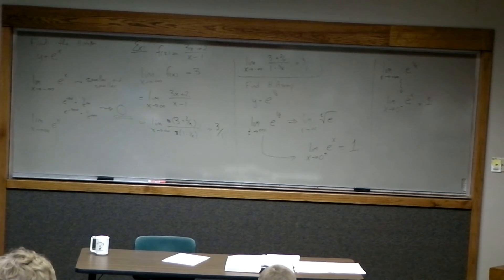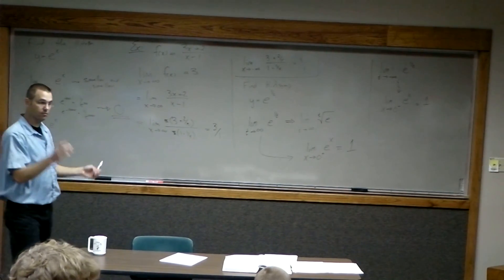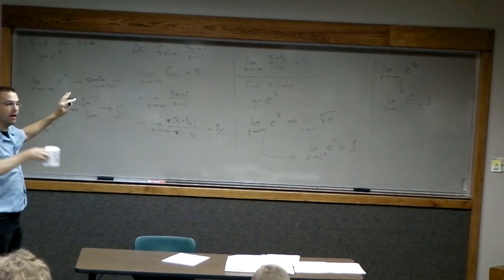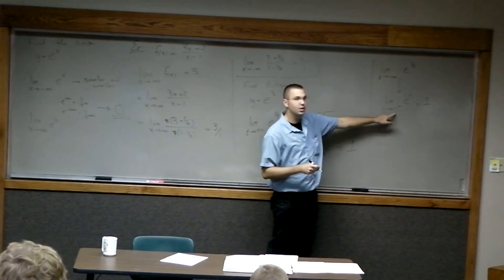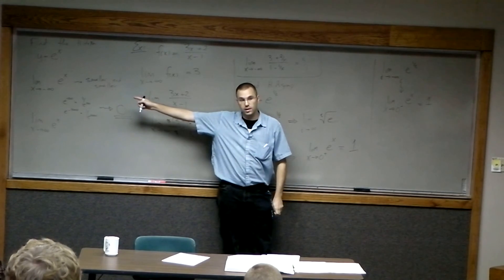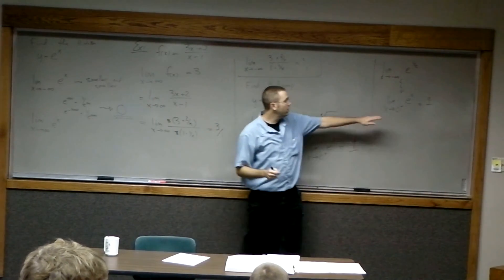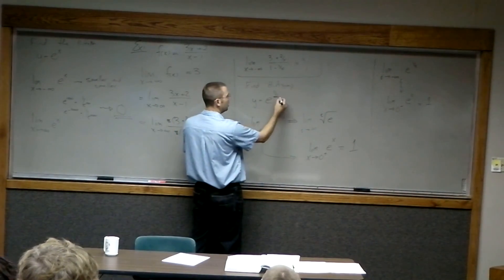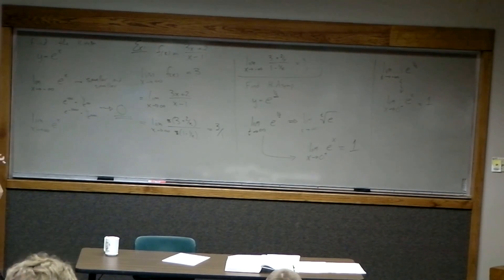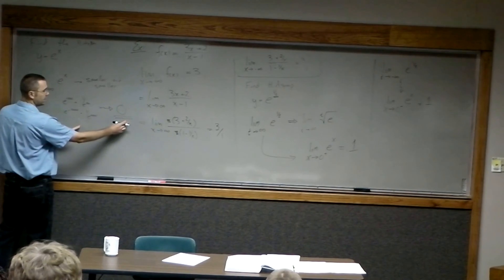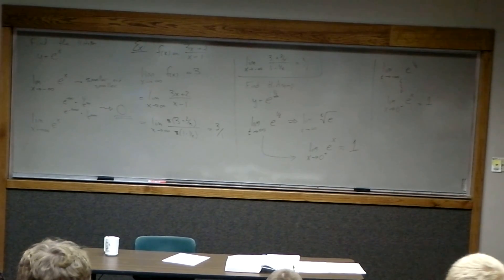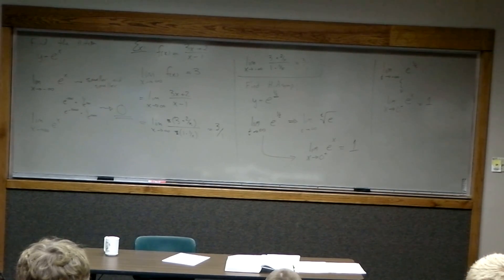What about the positive x direction? Notice the difference from the e to the (1/t) example — that limit was as x gets close to 0, whereas here we're looking as x goes to negative infinity. For e to the x in the positive x direction: if I plug larger and larger values of x into e to the x, it just gets bigger and bigger. It never gets close to any fixed number, so there is no horizontal asymptote in the positive direction.